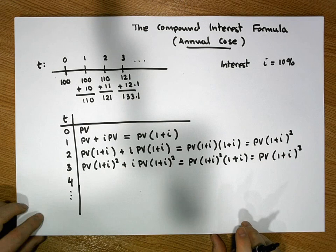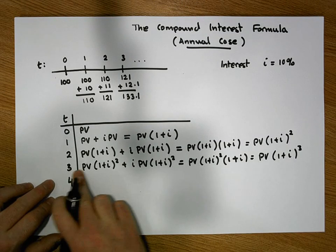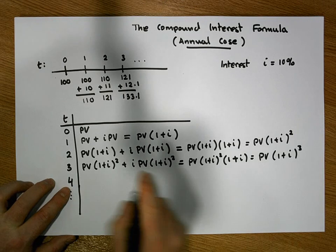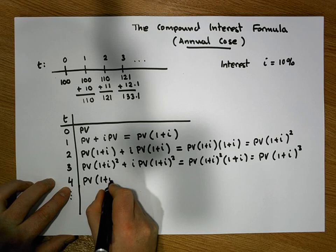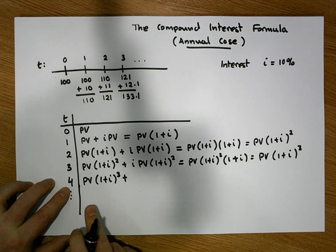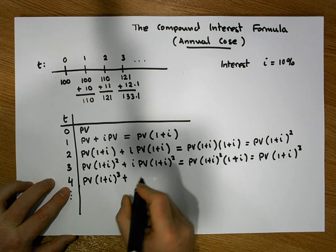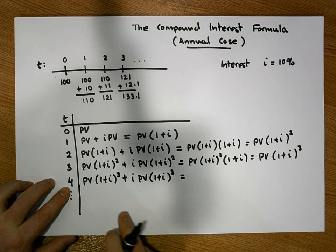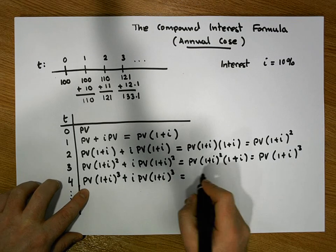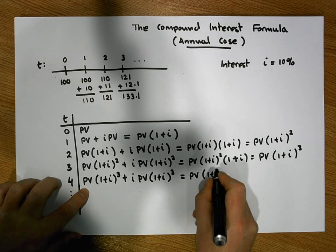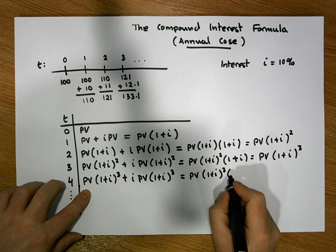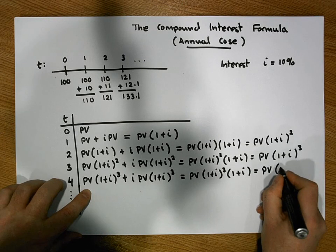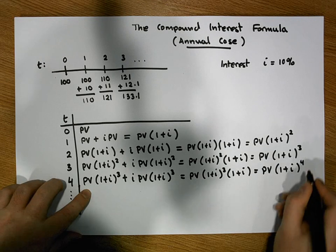Let's do this once more. After three years we have PV(1 + i)³, so after four years has elapsed we'll have what we had in the previous year — PV(1 + i)³ — plus an interest payment of i × PV(1 + i)³. Again there's a common term PV(1 + i)³, so factoring that out gives us PV(1 + i)³ × (1 + i), which equals PV(1 + i) to the power of four.